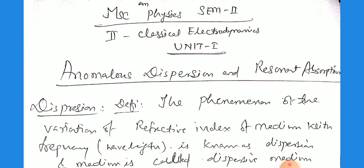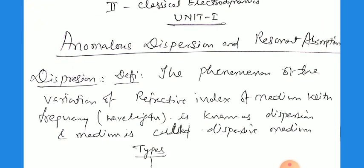What is dispersion? In earlier classes, dispersion means the phenomenon of the variation of the refractive index of the medium with the frequency or the wavelength, known as dispersion. An example is the rainbow, where the water droplet disperses white light into seven colours. This is due to the variation of refractive index with different wavelengths, since different colours have different wavelengths and thus different refractive indices.